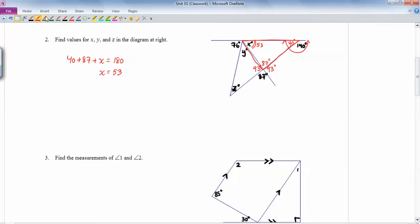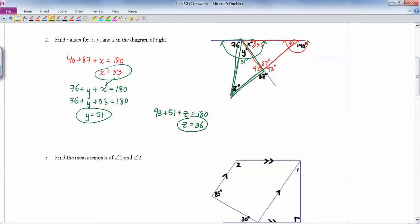These three angles, 76, y, and x form a straight angle. So 76 plus y plus x equals 180. And x is 53, so I can substitute that in there. That would make y 51. So here's x, here's y. So this is 51. And then we've got this triangle to work with right here. So 93 plus 51 plus z has to be 180. And if you work out what z is, you end up z has to be 36.